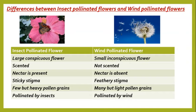Third, nectar is present in insect-pollinated flowers. Nectar is a sugary liquid found at the base of the plant that attracts insects like bees and butterflies. Wind-pollinated flowers have no nectar. Fourth, the stigma of insect-pollinated flowers is sticky or gluey, but the stigma of wind-pollinated flowers is feathery. Fifth, the pollen grains of insect-pollinated flowers are few but heavy, while pollen grains of wind-pollinated flowers are many but light.